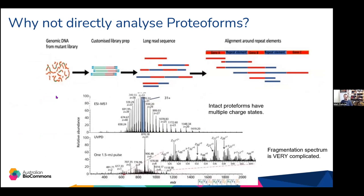In top-down proteomics on intact proteoforms, we end up with charge states where each peak represents different molecules of exactly the same proteoform, just with a different number of charges — so we dilute signal. The reason we don't do intact proteoforms is because things are very complicated. There's a lot of people doing some nice work on this, but we're not really there yet.